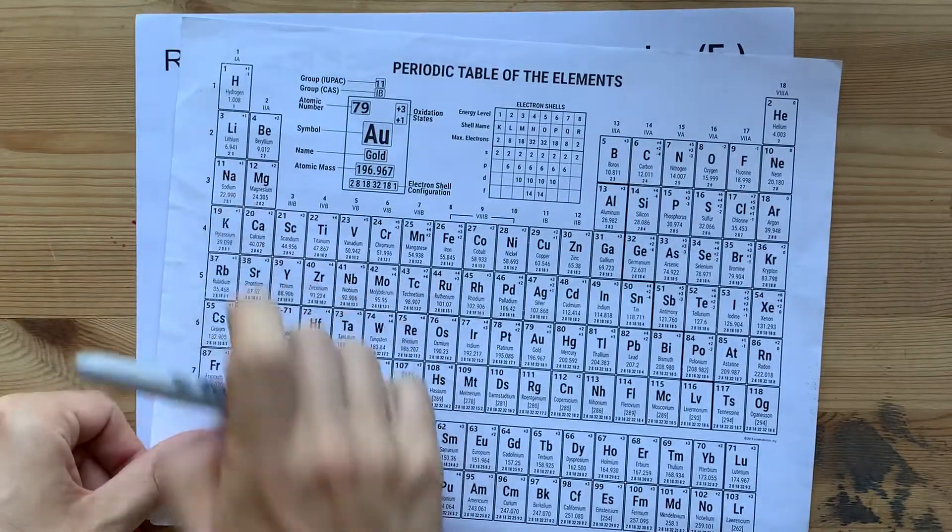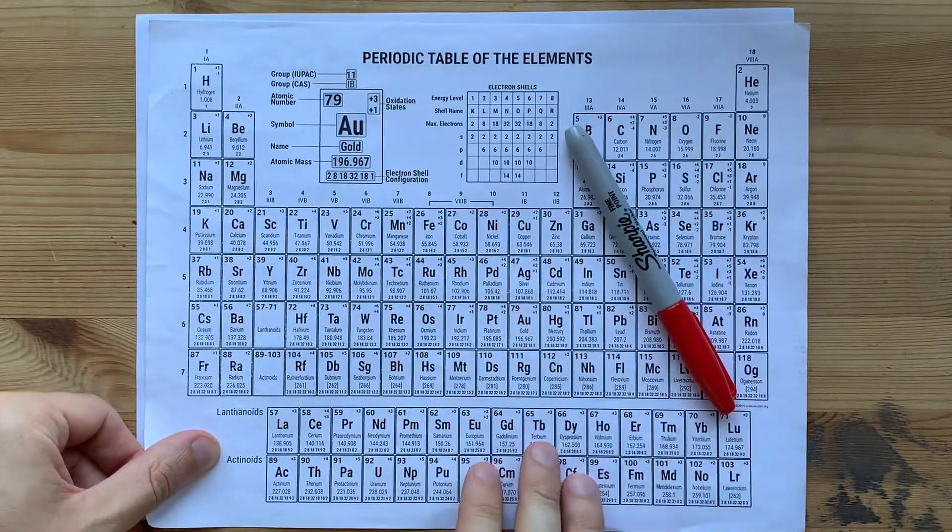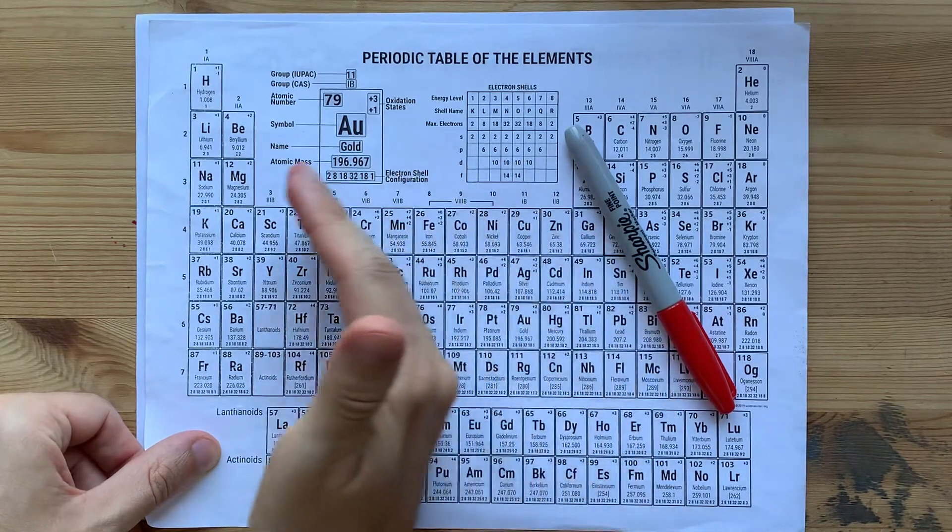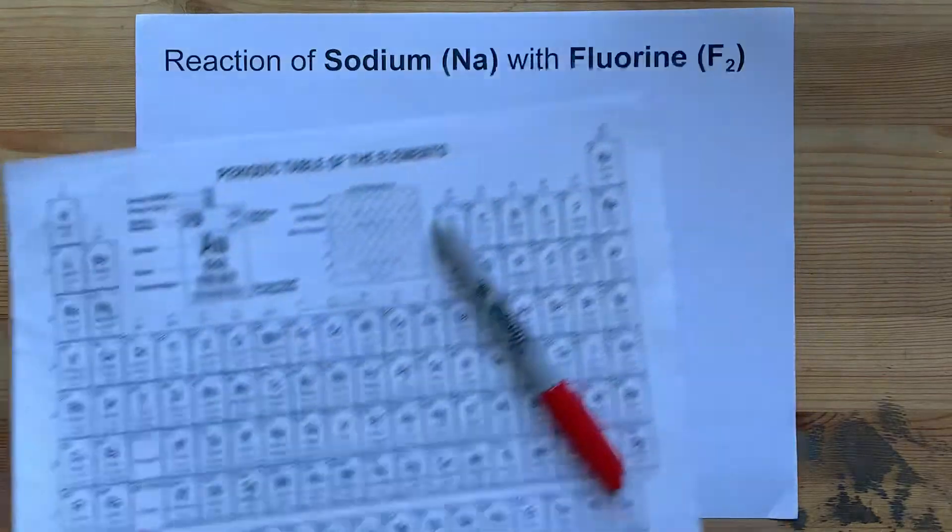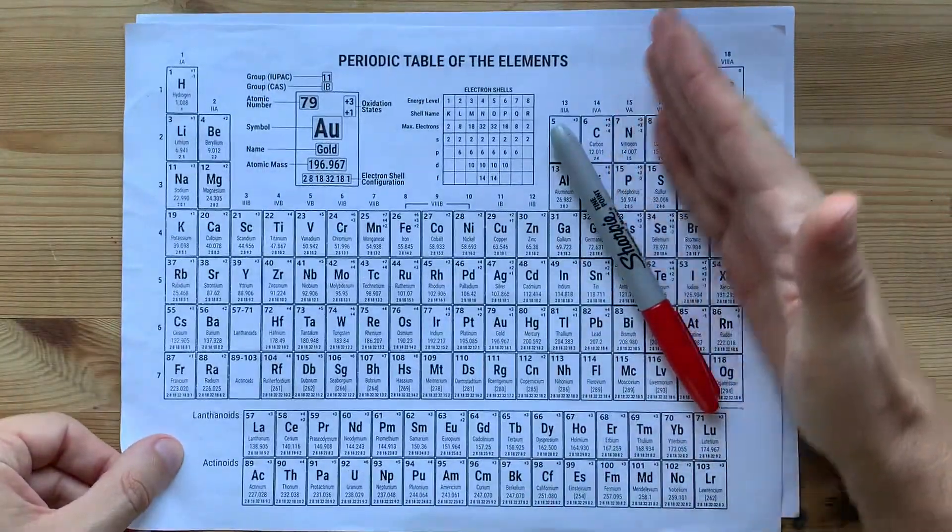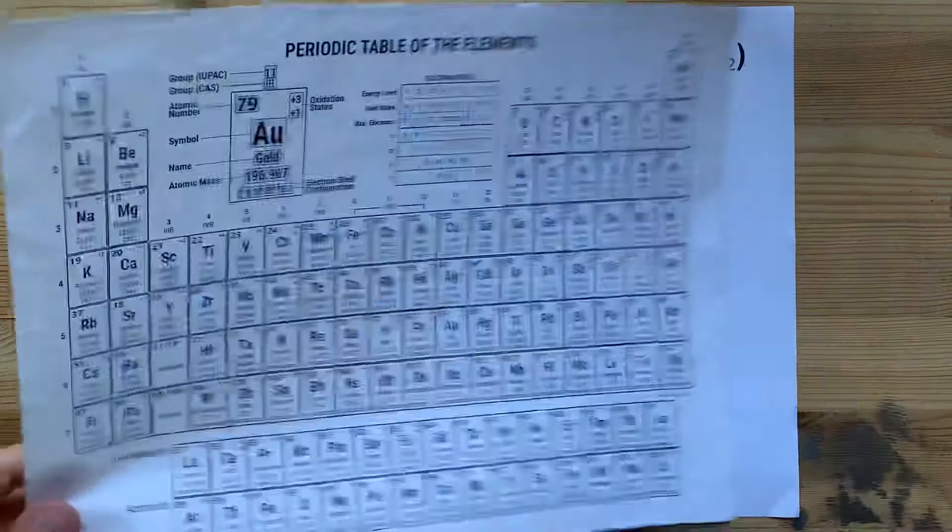Sodium is a metal, and I know that because there's a little staircase on the periodic table here, and everything to the left of it except for hydrogen is a metal. Fluorine is on the right-hand side of that staircase, which means it is a non-metal.